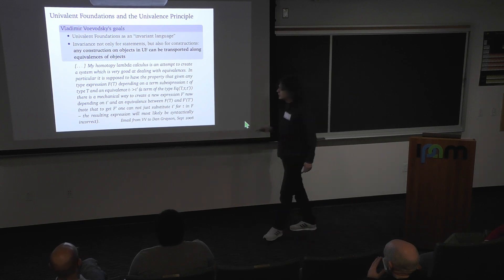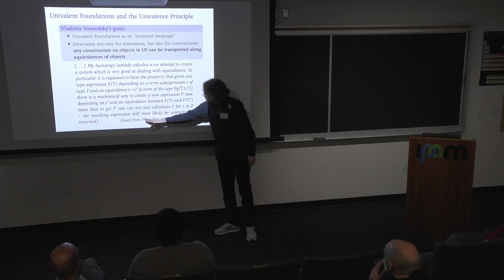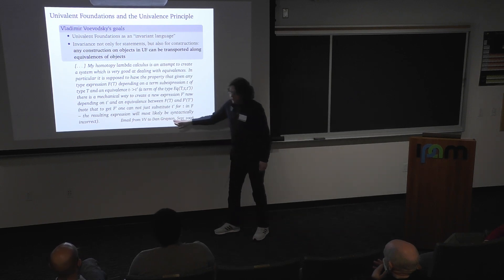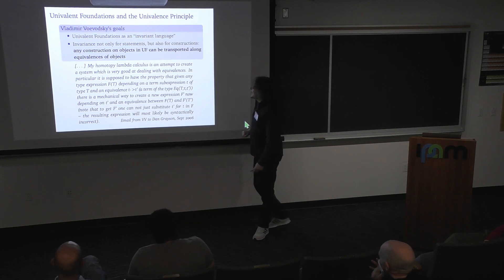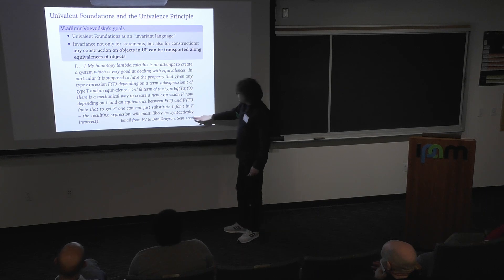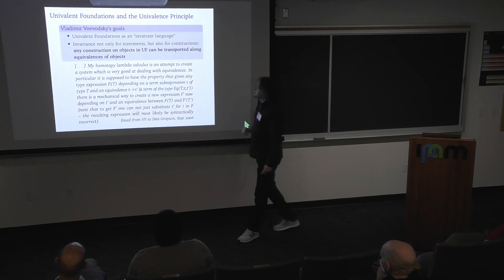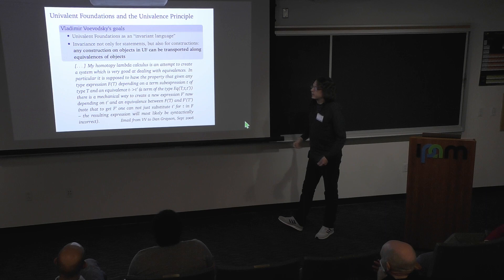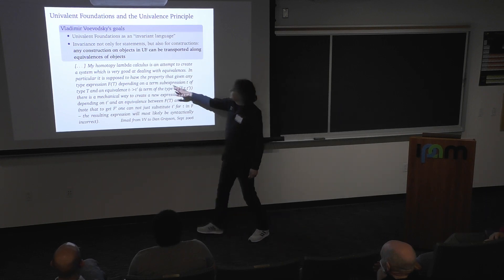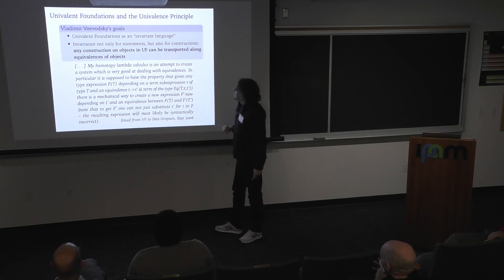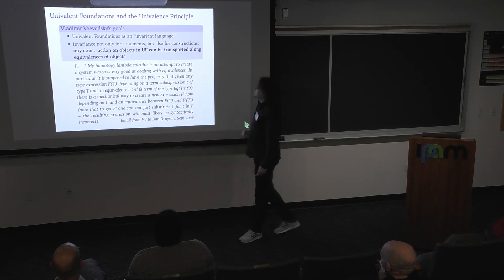I'm quoting from an email from Vladimir Voevodsky to Dan Grayson — who is also here in the audience — from 2006, about a theory he was working on at the time called homotopy lambda calculus, of which he says it is an attempt to create a system which is very good at dealing with equivalences.